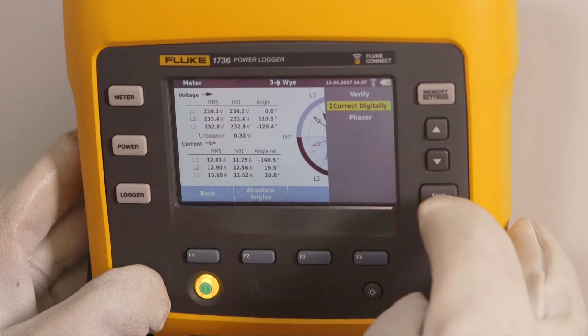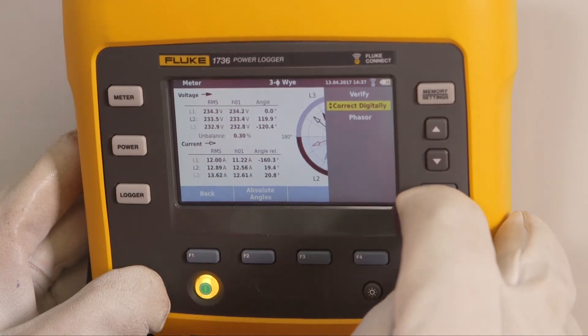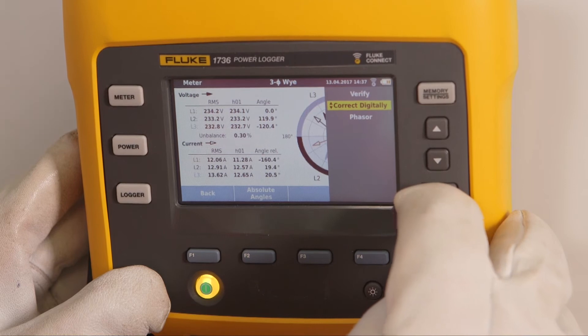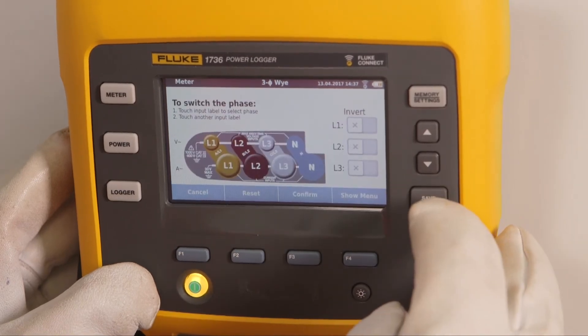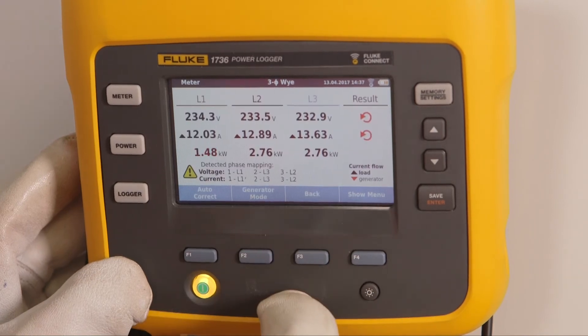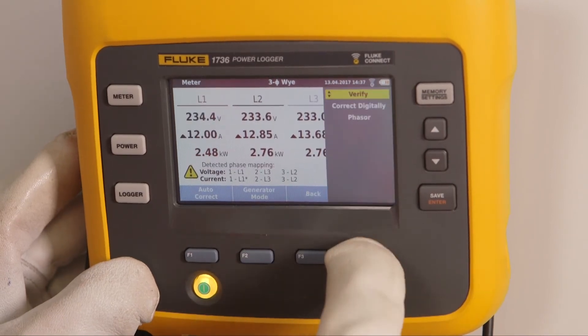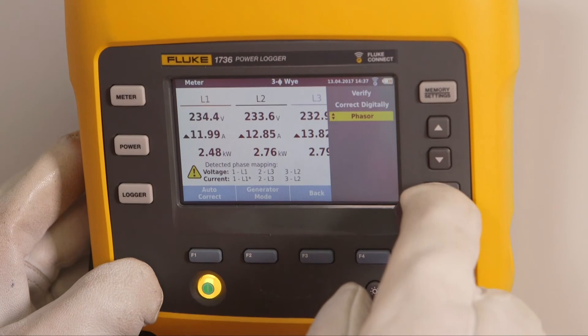Instead of disconnecting the device, correcting the connections manually, and redoing the measurement, you can correct the wrong connection by pressing a button. The currents are now measured correctly. Total time it took to correct is less than three seconds.